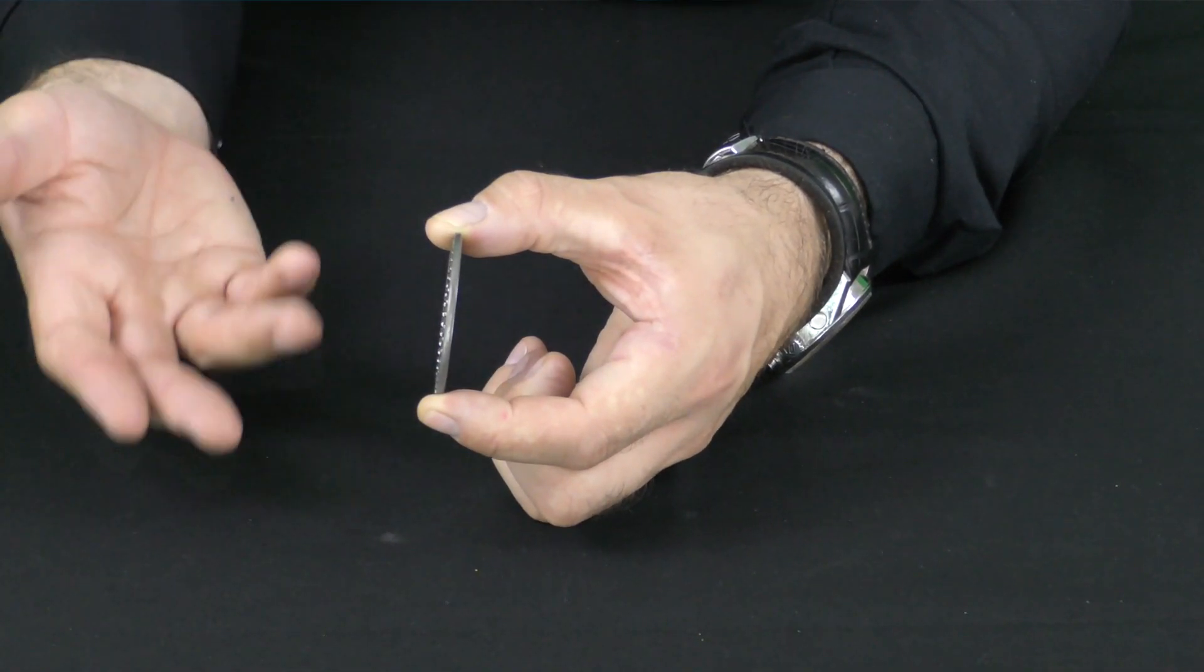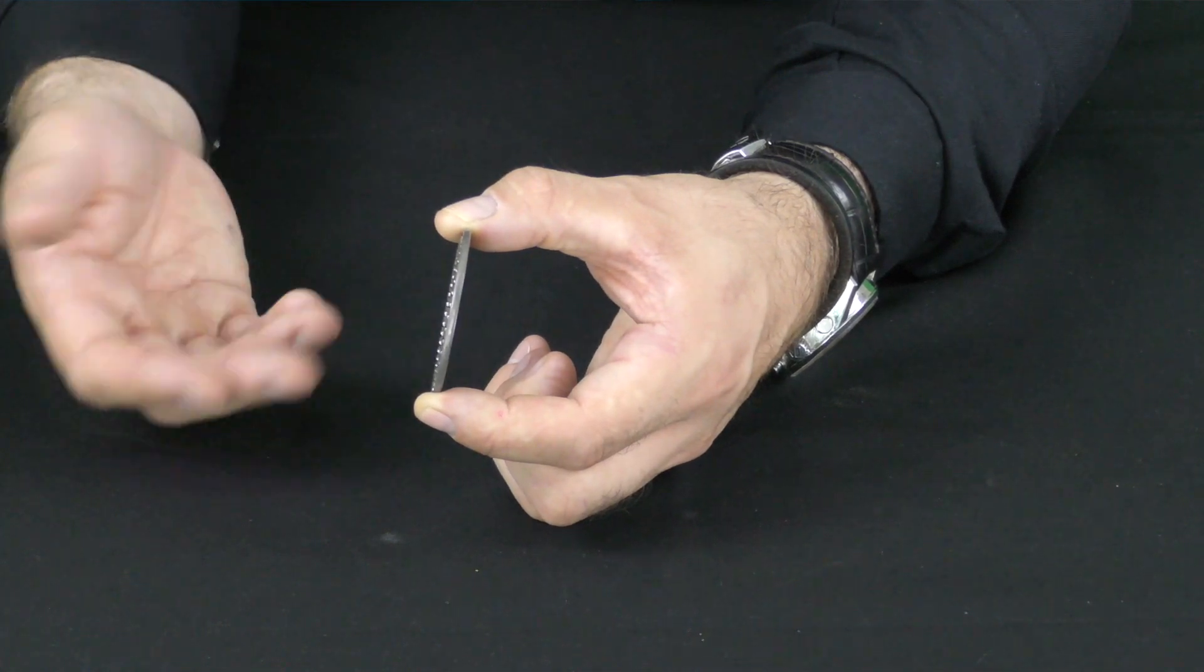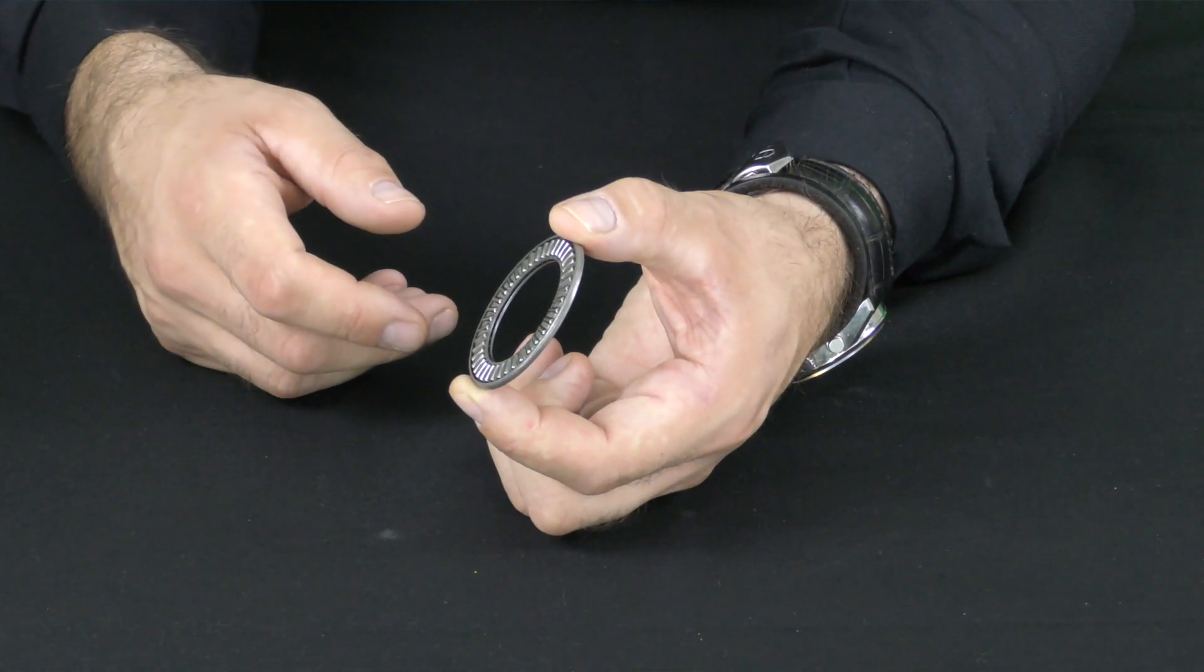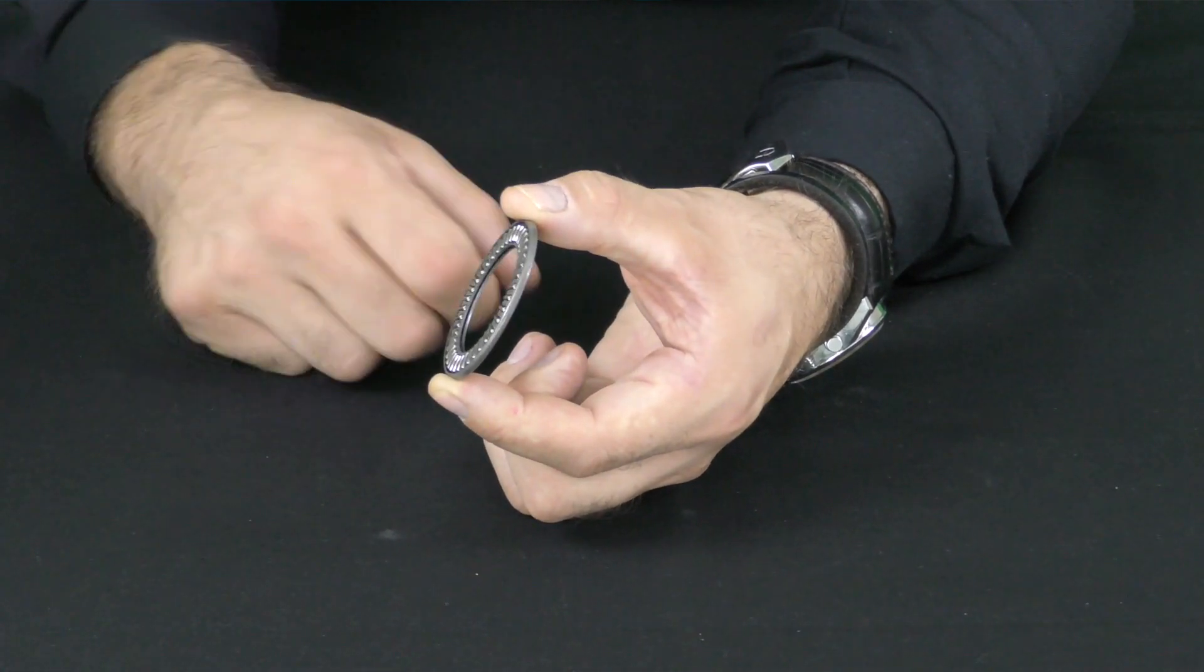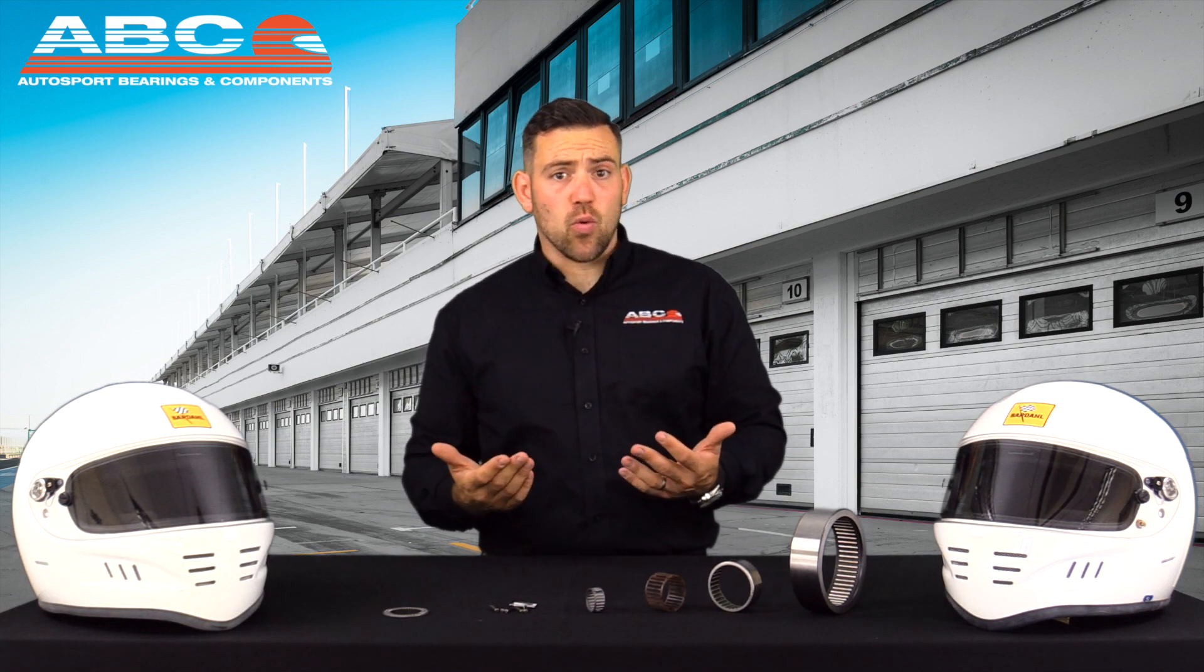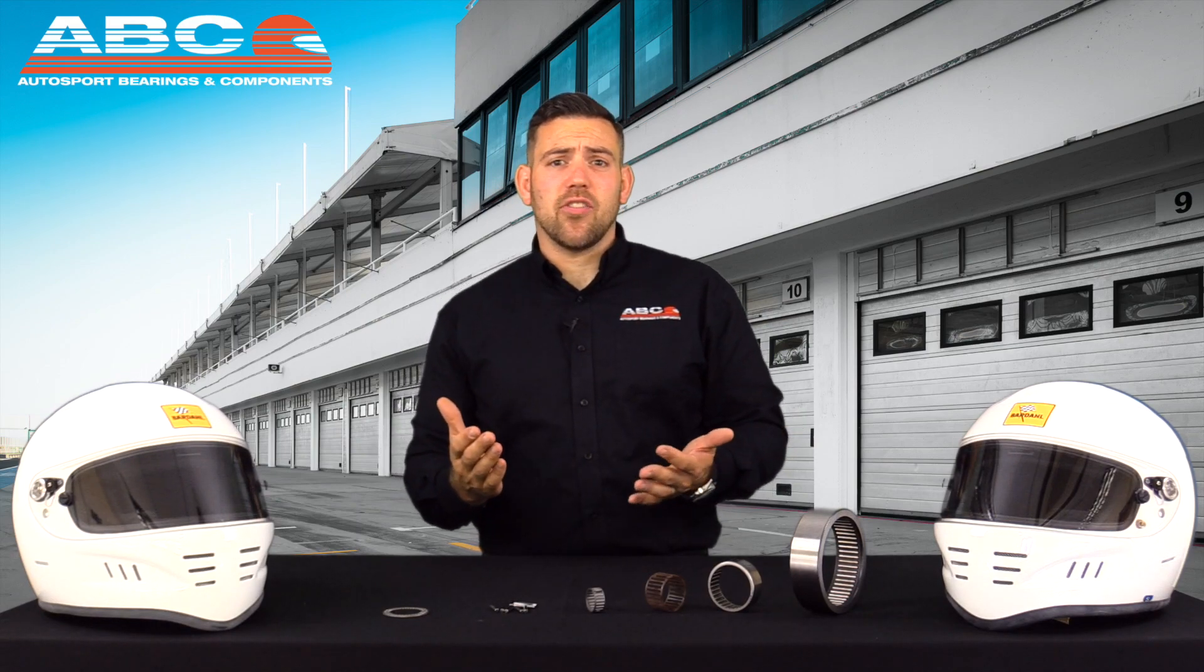This is important because often within a gearbox for example there will be some axial loads generated normally by the teeth geometry on the gears and this will need to be compensated for. Some of the main applications for needle roller bearings are within gearboxes both manual and automatic, often for main shaft or gear idler bearings. Things like crank and piston pin as well as various other applications.